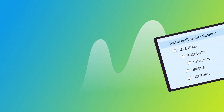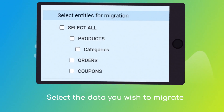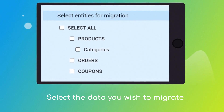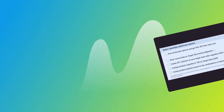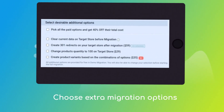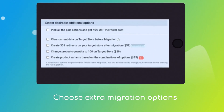Download the Cart2Cart Wix migration app to enable the connection with your Wix. Next, click the Choose Entities button to select the data types you'd like to migrate to Wix. And choose the additional options, like Create 301 redirects on Target Store, migrate images from the descriptions, or preserve order IDs, etc.